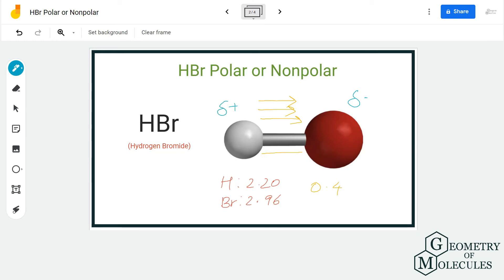As there are poles in this molecule due to the net dipole moment, HBr is a polar molecule. So hydrogen bromide is a polar molecule.